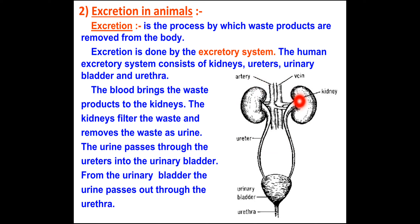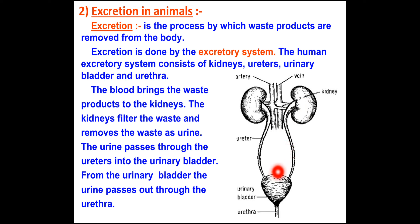If you see this diagram of the excretory system, here you can see the pair of kidneys. This tube-like structure is called the ureter, and the bag-like structure on the downside is called the urinary bladder, and below that is the urethra.